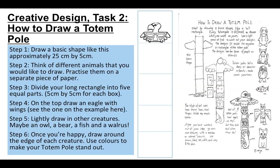Step three: divide your long rectangle into five equal parts, five centimetres by five centimetres for each box. You can see there are five different boxes. Step five: lightly draw the other creatures — maybe an owl, a bear, a fish and a walrus — into the boxes. You will notice from the images that we've already looked at, an eagle tends to be the most popular creature at the top of these totem poles, so I've put in an eagle at the top. You can have a go at copying that one.